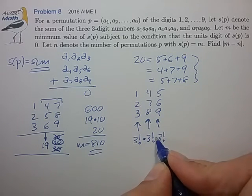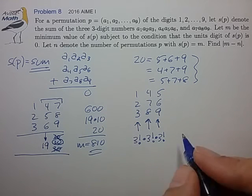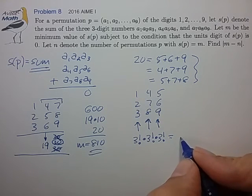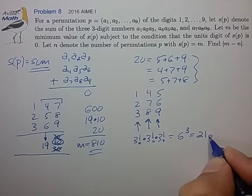So the total number of arrangements is simply the product. So that's 6³, and that's equal to 216.